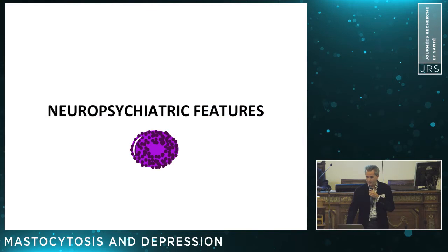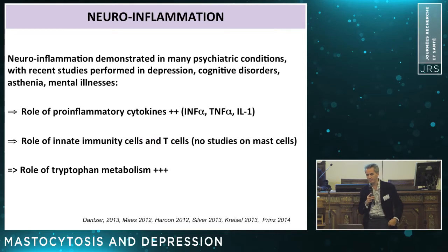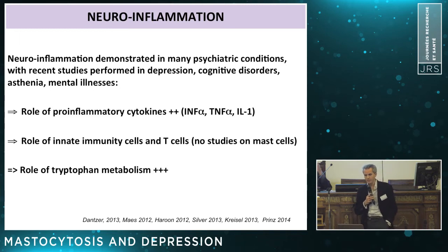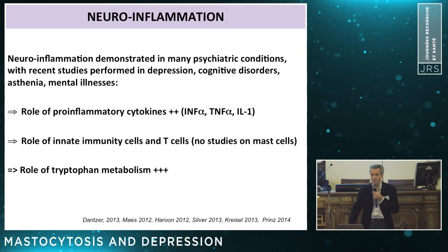I will first describe the neuropsychiatric features. As you know, neuroinflammation has been demonstrated in virtually all psychiatric conditions, with the role of pro-inflammatory cytokines, the role of innate immunity and T cells — so far, no studies on mast cells — and the role of tryptophan metabolism as a potential final pathway in neuroinflammation-related psychiatric disorders.